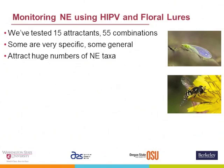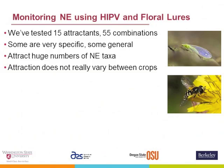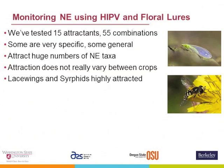We've tried to reduce the numbers we're looking at in general to a couple different groups. We're testing this on apple, sweet cherry, pear, and walnuts. We don't really seem to see any attraction variance between the different crops — if a particular species occurs in a crop, they're attracted in the same manner as in other crops. The green lacewings and the syrphid flies are highly attracted, and these are the ones we're trying to use as basically our indicator species for the effects of pesticides on natural enemies.